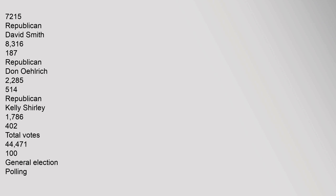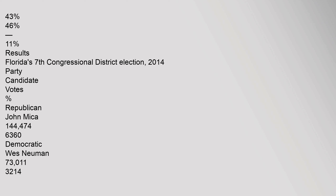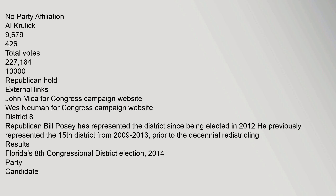General Election polling showed Micah at 46% versus a Democratic opponent at 43% in hypothetical polling from October 2013. General Election Results for Florida's 7th Congressional District: Republican John Micah 144,474 (63.60%), Democratic Wes Newman 73,011 (32.14%), No Party Affiliation Al Krulik 9,679 (4.26%). Total Votes 227,164. Republican Hold.